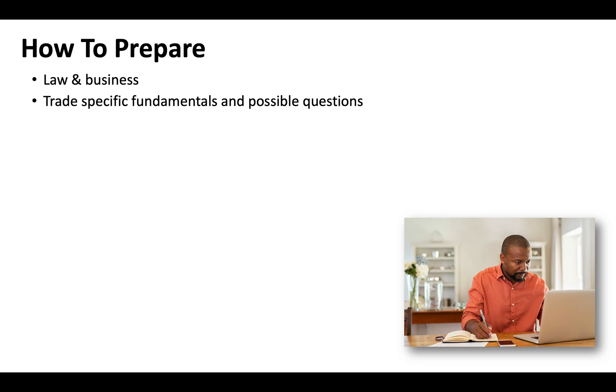When it comes to preparing for your California contractor license exam, 50% of the test is law and business, so make sure you take the time to understand all the possible questions that could come up. You need to be tight on your trade-specific fundamentals. California health and safety codes are also critical — California takes workers' safety, job site safety, environmental safety, and workers' rights extremely seriously, so they always represent a significant portion of the exam.